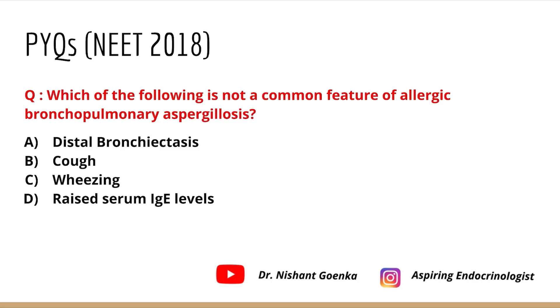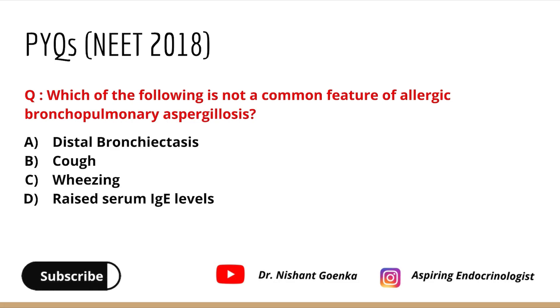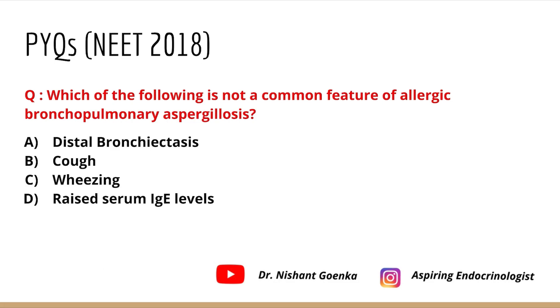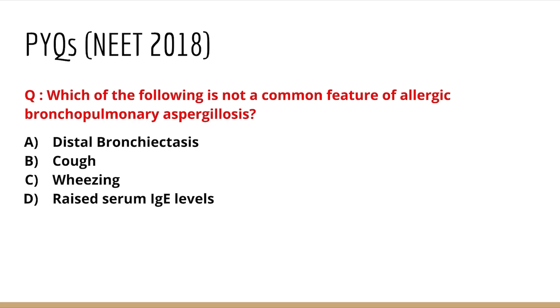The options are distal bronchiectasis, cough, wheezing, and raised serum IgE levels. To answer this, we should first have a brief idea about what ABPA is and what the criteria to define ABPA are.